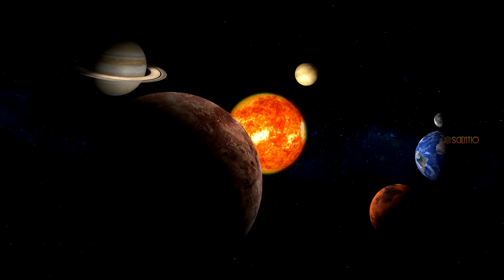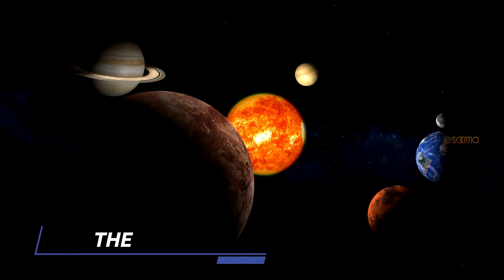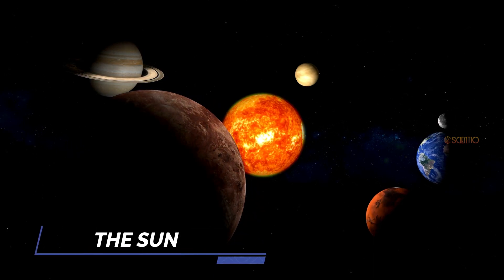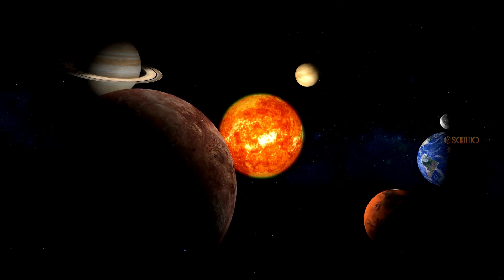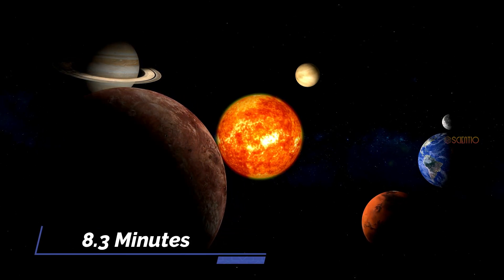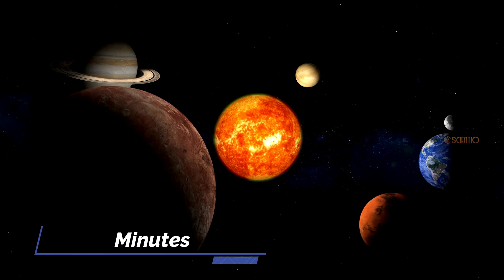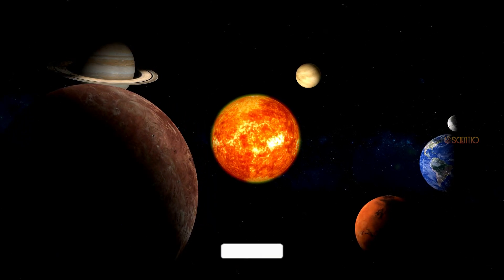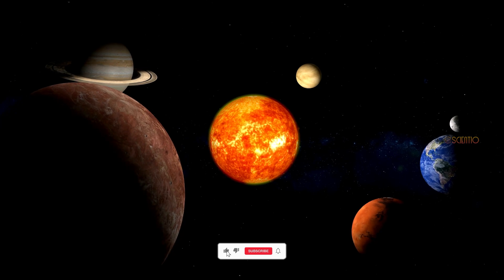Next, let's head to the center of our solar system, the sun. At the speed of light, it would take us 8.3 minutes to reach the sun. As we approach, we would witness the sun's fiery surface and massive coronal ejections that make up its atmosphere.